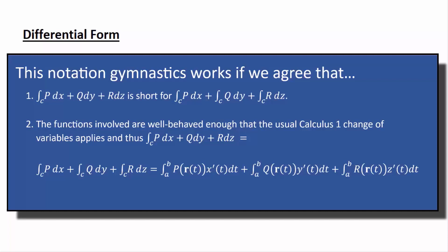p in terms of T, that's what p of r of T means, little r of T, x prime of T dt. x prime of T dt is dx. And then you add that to the integral from A to B, T equals A to T equals B of q in terms of T times y prime of T dt. y prime of T dt is just dy.